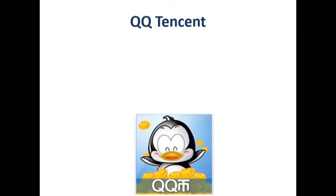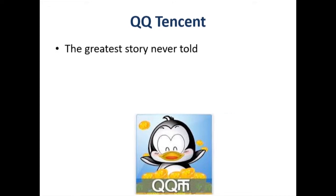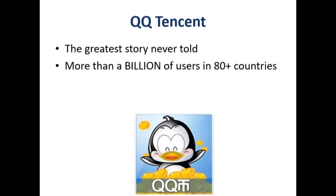QQ Tencent — have you ever heard of it? It was a successful project. Tencent is a Chinese messenger, like Skype or WhatsApp, and it had its own virtual currency. I believe it's the greatest story never told in terms of currencies — it had more than one billion users in over 80 countries, making QQ coin by far the biggest private or non-fiat currency in the world, way bigger than Bitcoin.